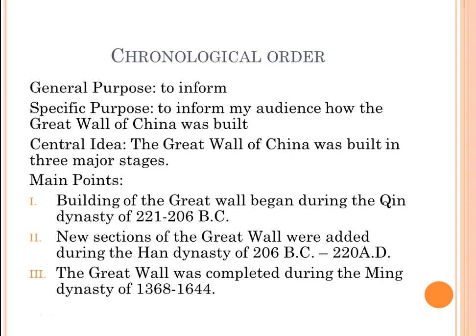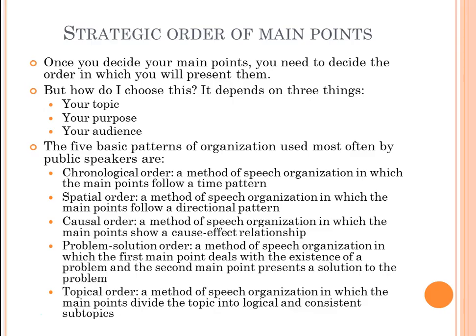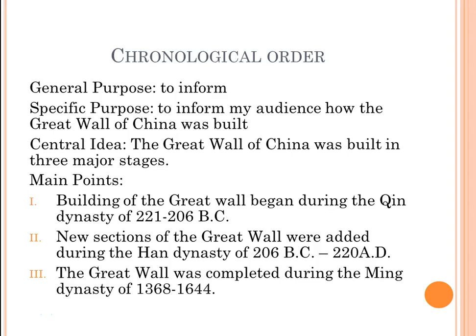With chronological order and the Great Wall example, the main points follow a time pattern: building began during the Qin Dynasty of 221 to 206 BC; new sections were added during the Han Dynasty of 206 BC to 220 AD; and the Great Wall was completed during the Ming Dynasty of 1368 to 1644. We can see the clear progression of time — that's chronological order.